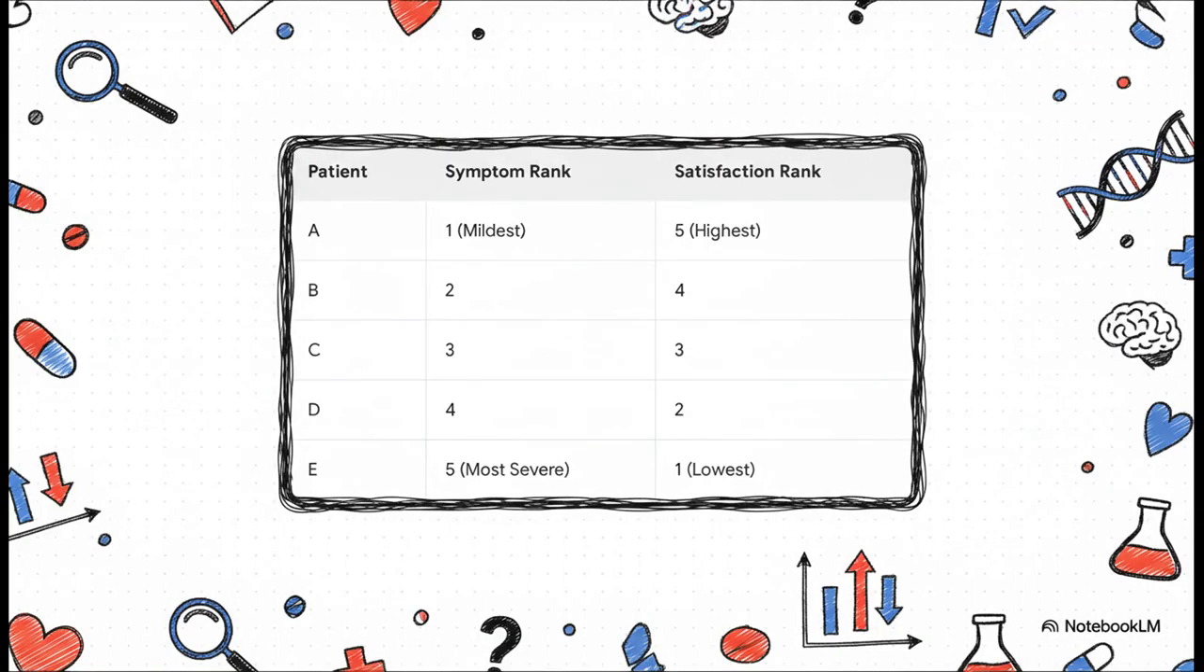For instance, let's say we rank patients by how severe their symptoms are, from mildest to most severe. Then we rank them again based on their satisfaction level, from lowest to highest. Now we can just compare these two lists of ranks and see if a pattern pops out.